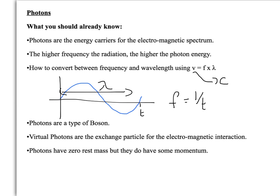One of the things you may or may not know, photons are actually a type of boson, so that changes the different rules that govern their behavior. You should know that virtual photons are the exchange particle for the electromagnetic interaction, because I've covered that in previous videos. And another thing, photons have zero rest mass, but they do have some momentum.